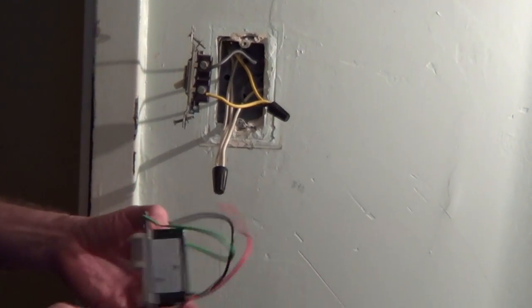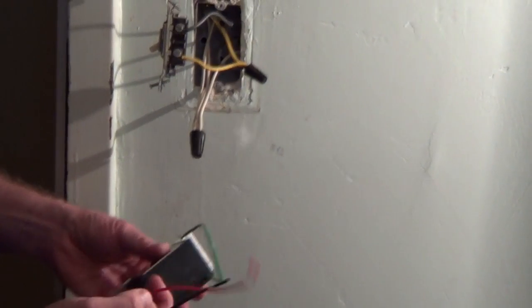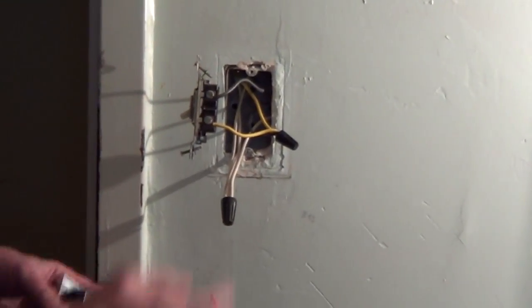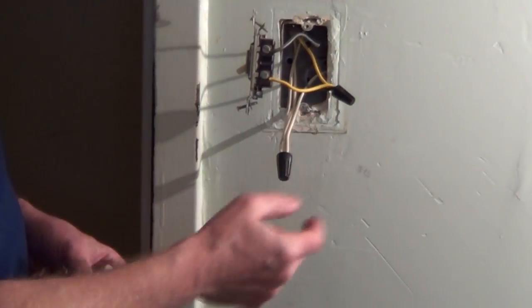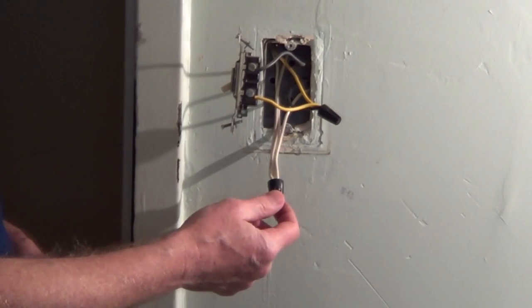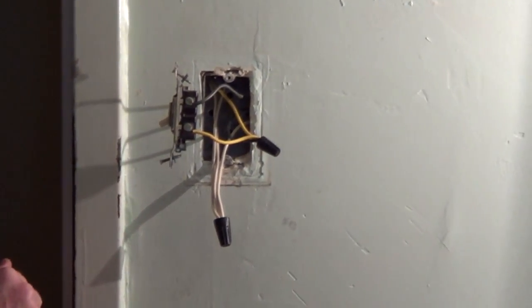In this case we have a single pole switch and we have a ground wire, we have two hot wires and a switch is just a break in the hot. So we have hot coming from the service panel and then going up to the lights. And if you have white wires in the box they're going to be twisted off with a wire connector. They're never connected to a switch.